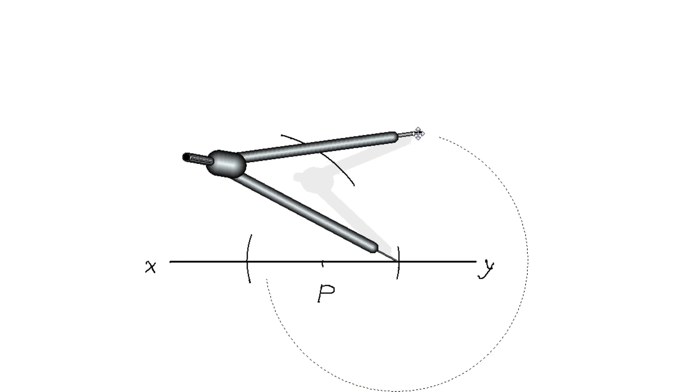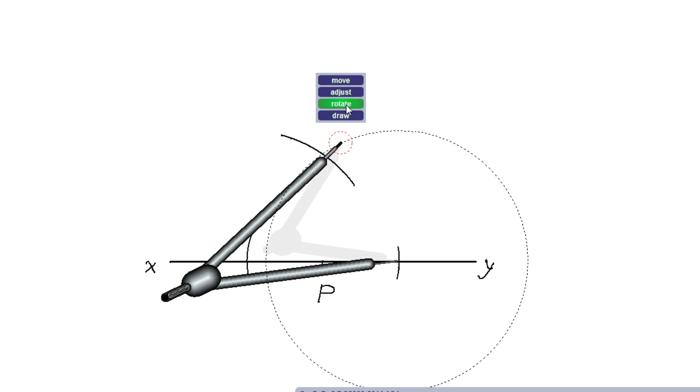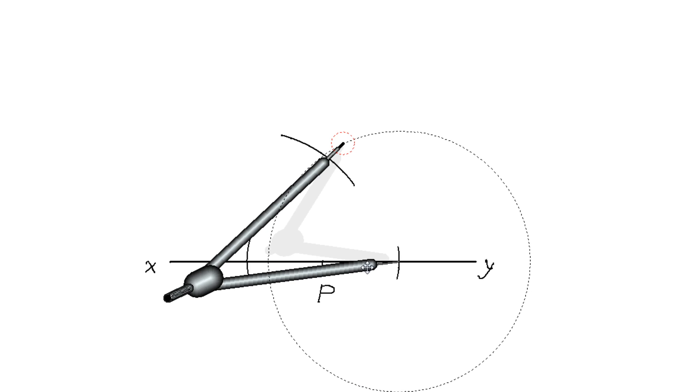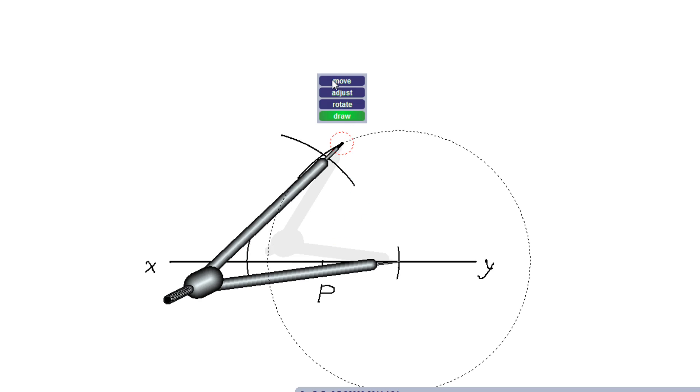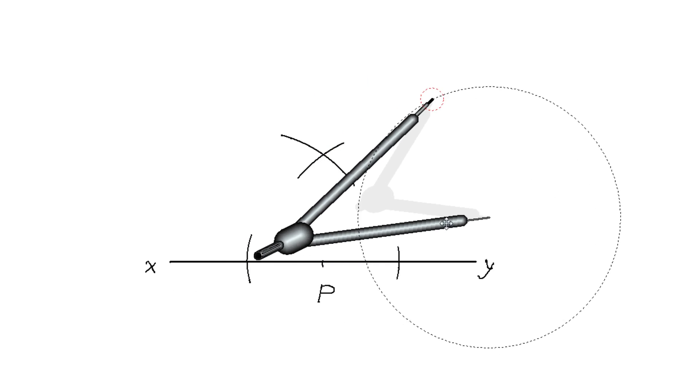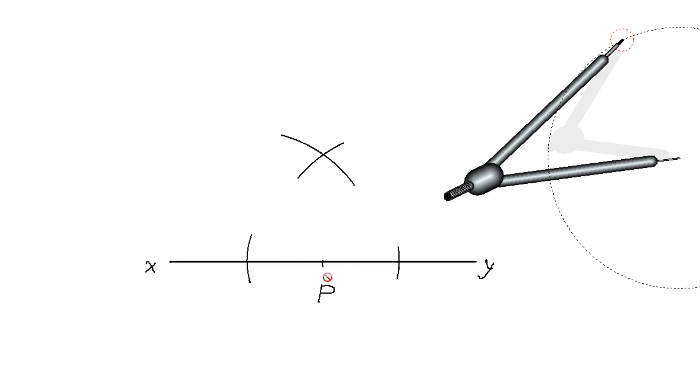Rotate it a little bit, bring it to this side, and position it exactly on point D. Now draw the arc. These two arcs are intersecting each other. Let us say they intersect at point Q.